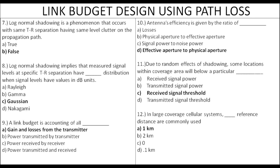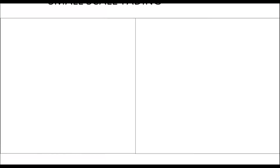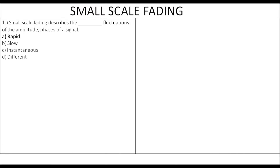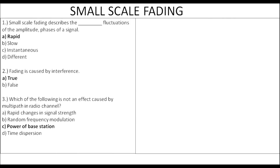Now, small scale fading. The free space propagation model is a rapid fluctuation model. It causes destructive interference and a different time for the transmitted signal. Small scale fading is not affected by the power of the base station, but is affected by TR separation distance, time dispersion, rapid changes, and random frequency.